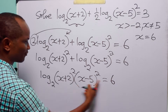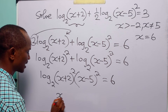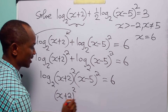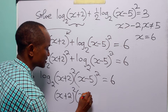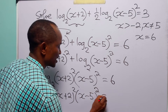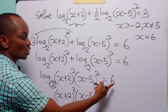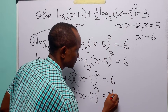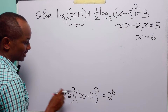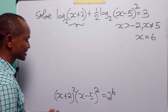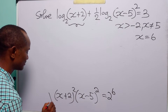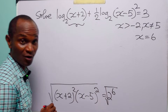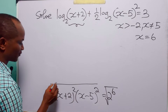From here we have that (x plus 2) squared multiplied by (x minus 5) squared equals 2 to the power 6. To solve this equation we take the square root of both sides.